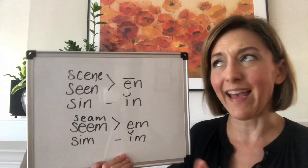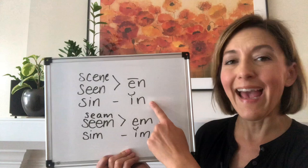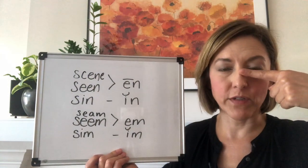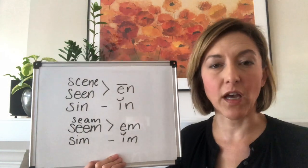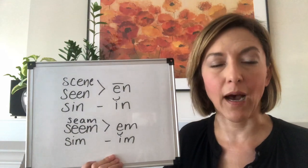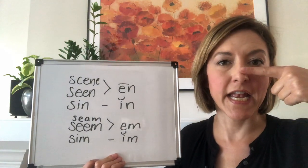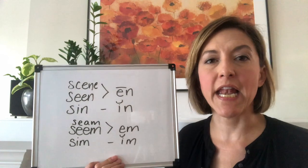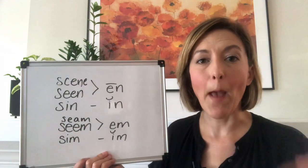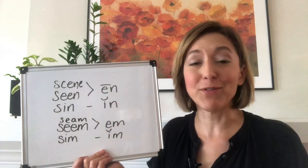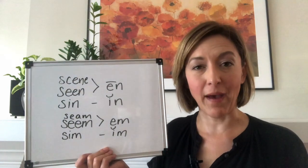For the N sound, the air is going to come out of your nose and you are going to touch the tip of your tongue to the back of your top front teeth. For the M sound, your lips are just going to be closed and the air is going to come out of your mouth.